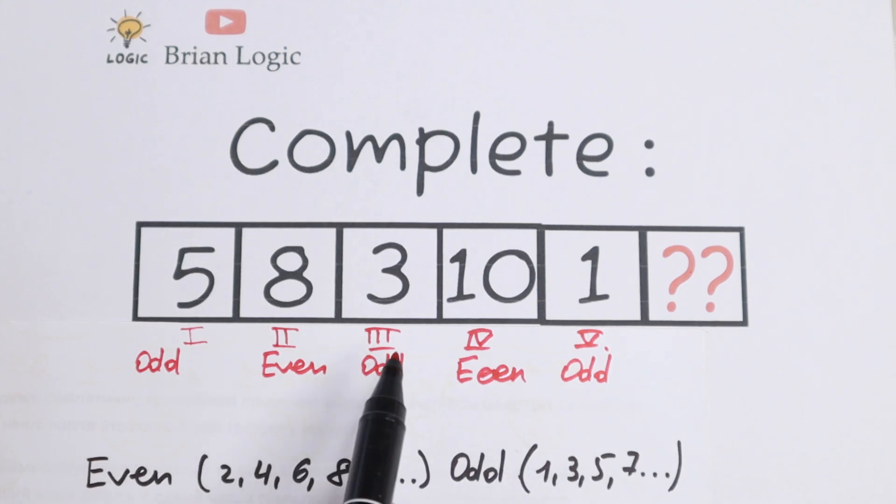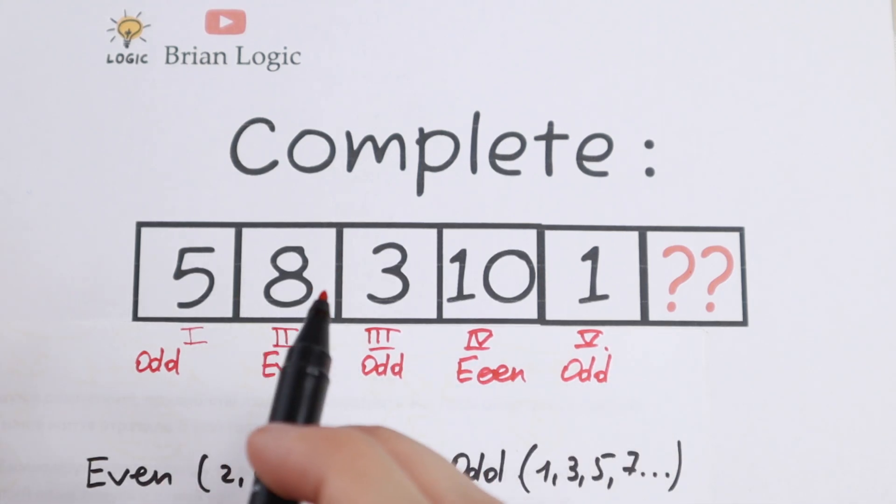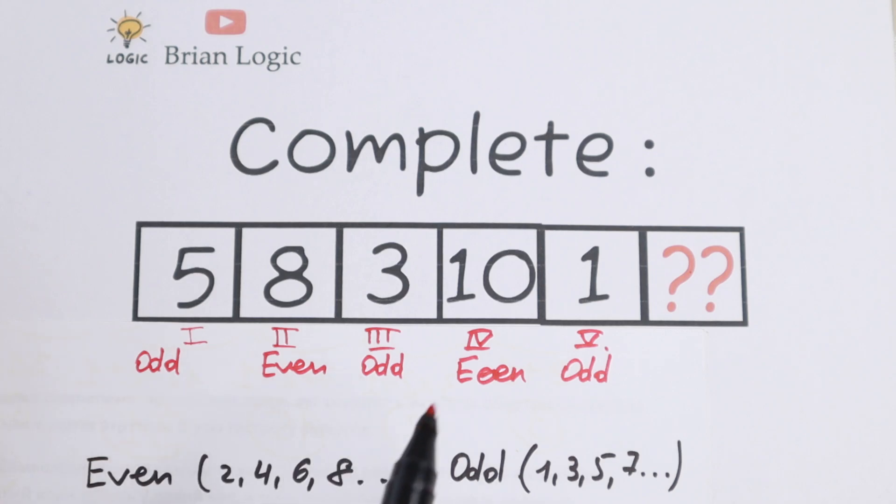If odd number, even number, odd number, even number and odd. So these numbers, it's really good because we have a pattern. So take a look. If we are talking about odd numbers.